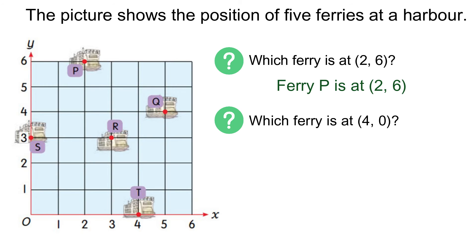What ferry is at 4, 0? Look at x-axis and look for 4. Y is equal to 0. That means the ferry lies on the x-axis. Ferry T is at 4, 0.